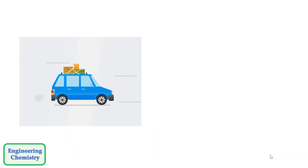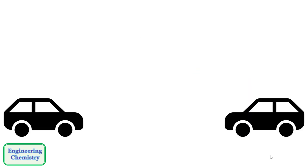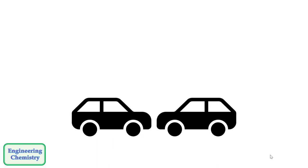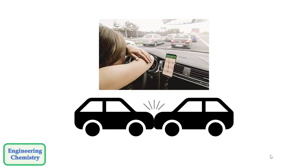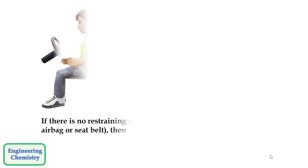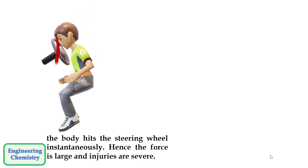Moving objects have momentum. Unless an outside force acts on an object, it will continue to move at its present speed and direction. A car consists of several objects including the vehicle itself, loose objects in the car, and of course the passengers. If these objects are not restrained, they will continue moving at whatever speed the car was traveling at, even if the car is stopped by a collision. This force from the steering wheel causes injuries to the body in an accident. If there is no restraining device like an airbag or seatbelt, the body hits the steering wheel instantaneously.